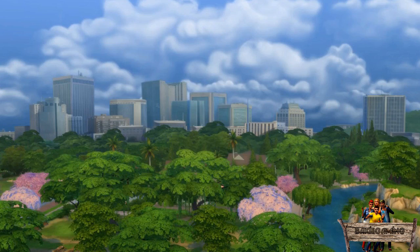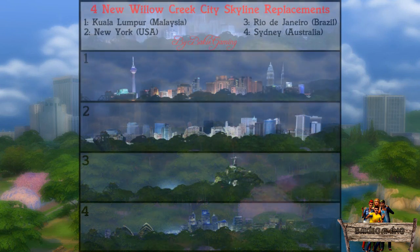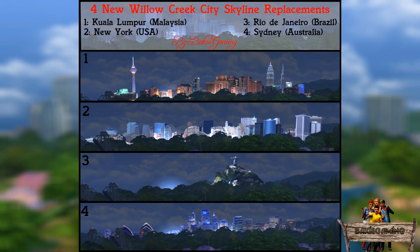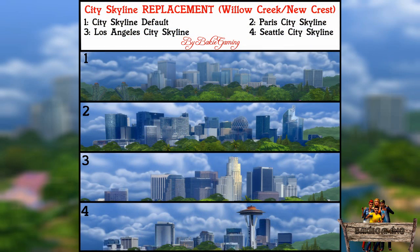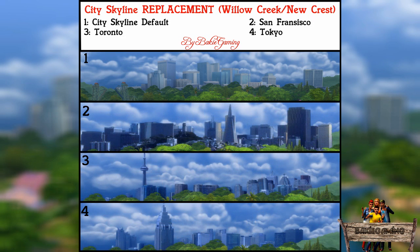If you have missed them for whatever reason here is a short overview. The first pack of backdrops I made were from the famous cities Kuala Lumpur, New York, Rio de Janeiro and Sydney. I also made a pack containing the cities LA, Paris and Seattle. The final pack of real cities contains San Francisco, Toronto and Tokyo.